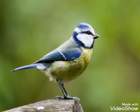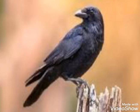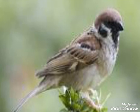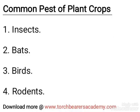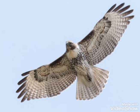Number three, birds. Birds are divided into two large groups: the plant or seed eaters, and the meat eaters. The plant-eating birds damage crops by eating the fruits and seeds of crops like rice and maize. Examples of such birds are crows, sparrows, and pigeons. The meat-eating birds are of great importance to farmers because they reduce the number of insects and rodents in the farm. Examples of such birds are owls, hawks, and chickens.